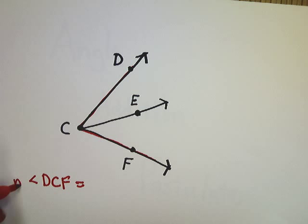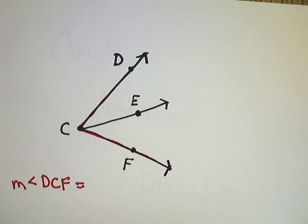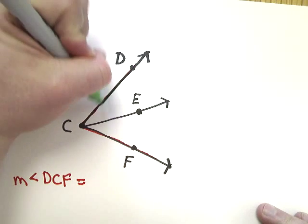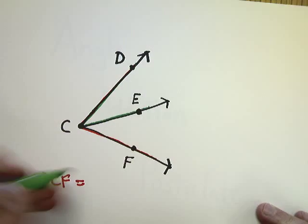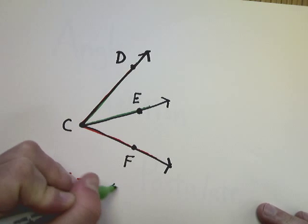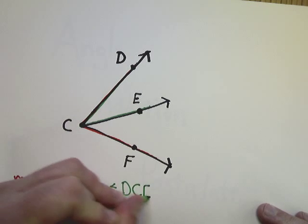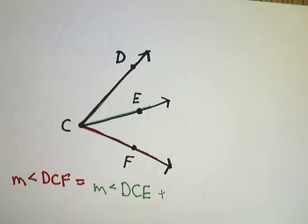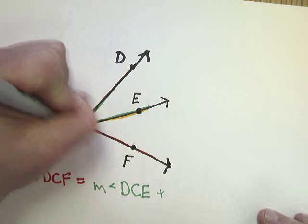Or the measure of this, I'm sorry, is actually equal to the sum of the smaller ones. So, one of the smaller ones is DCE, and then maybe I want the other one to be, or I can't choose, it's already there for me, ECF.